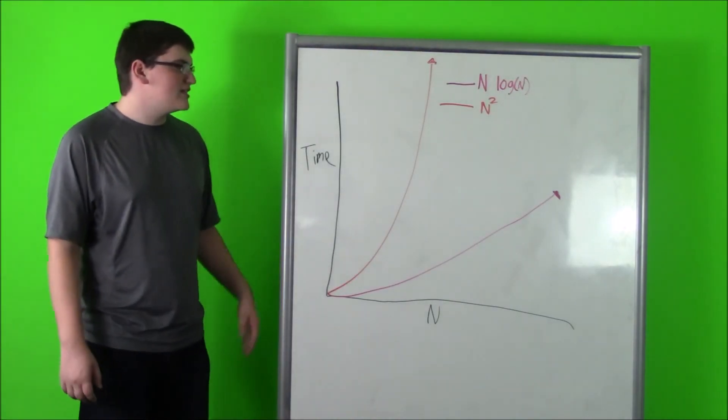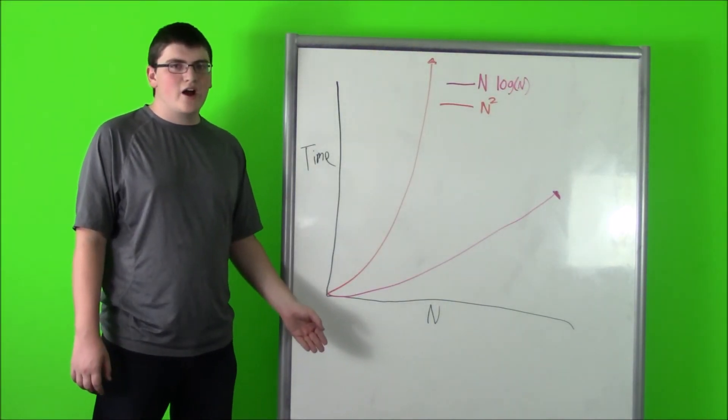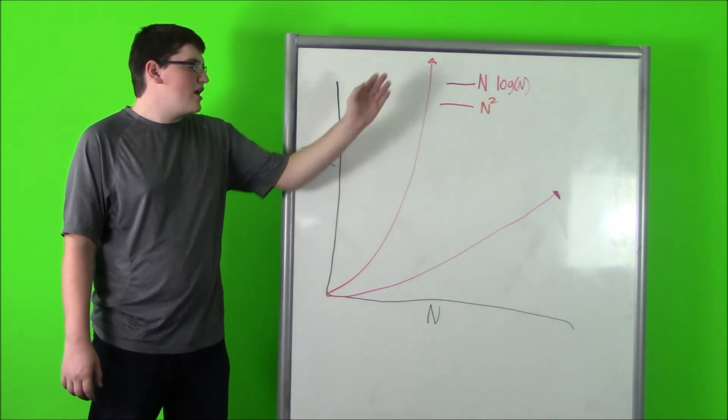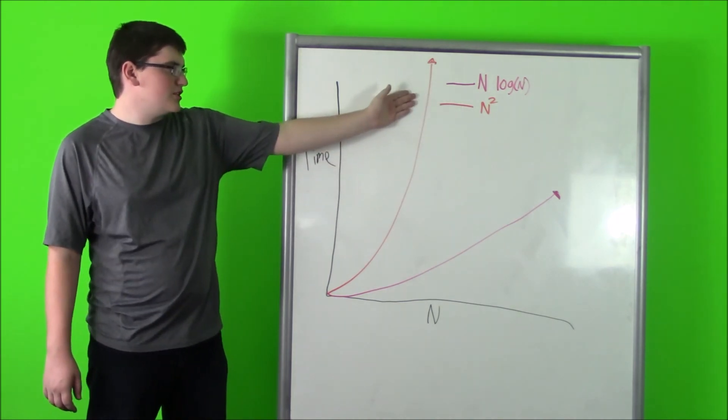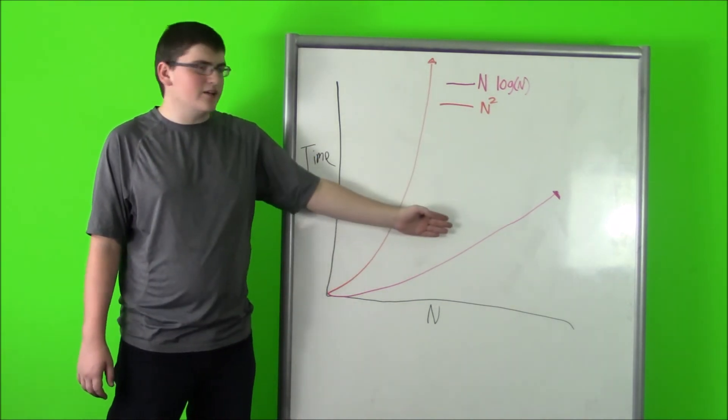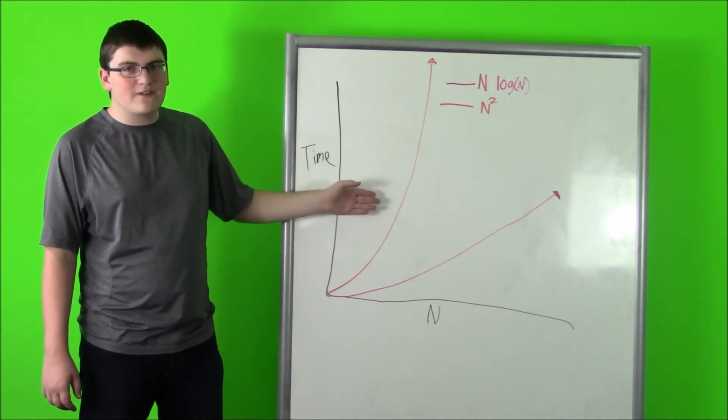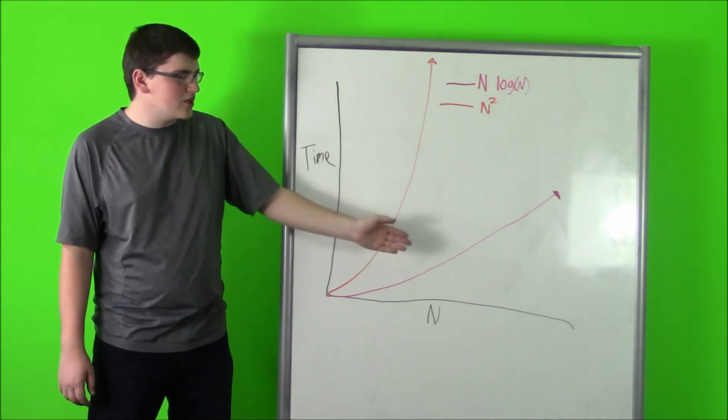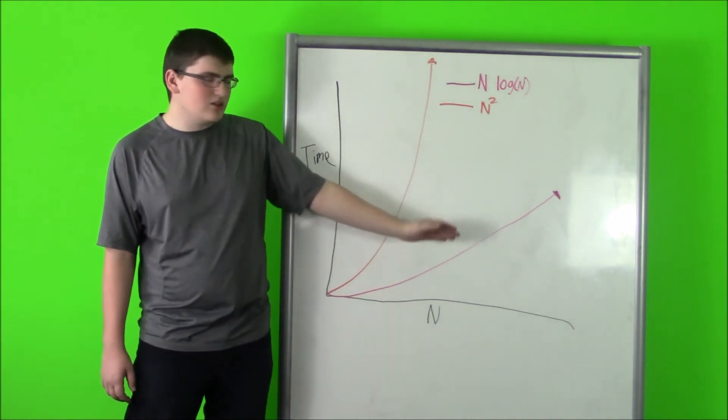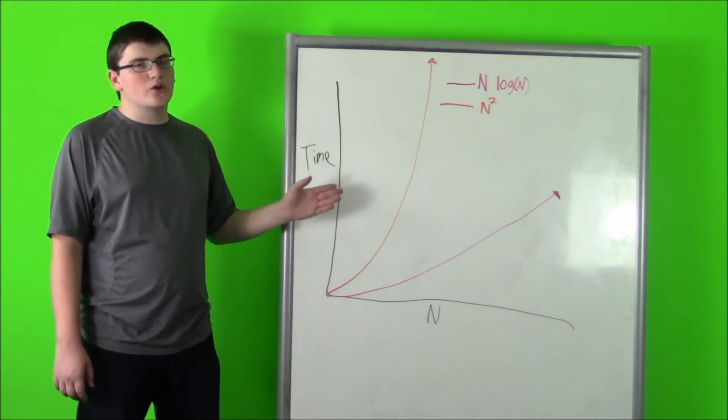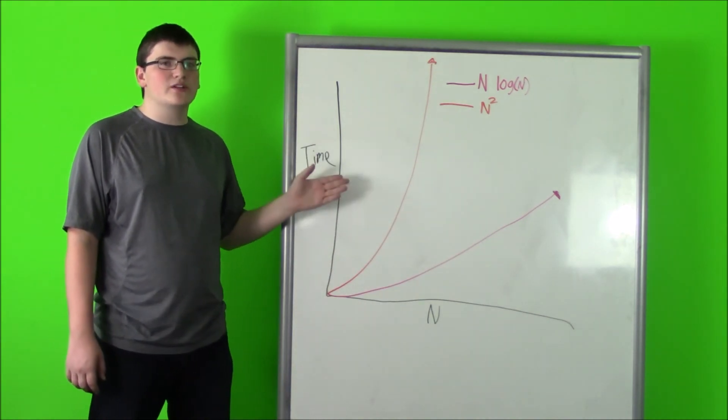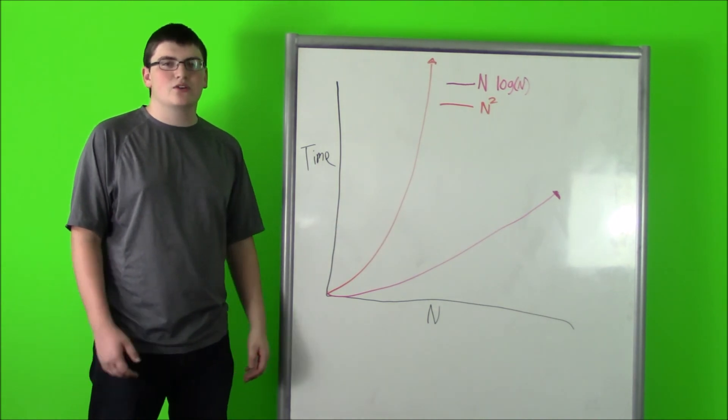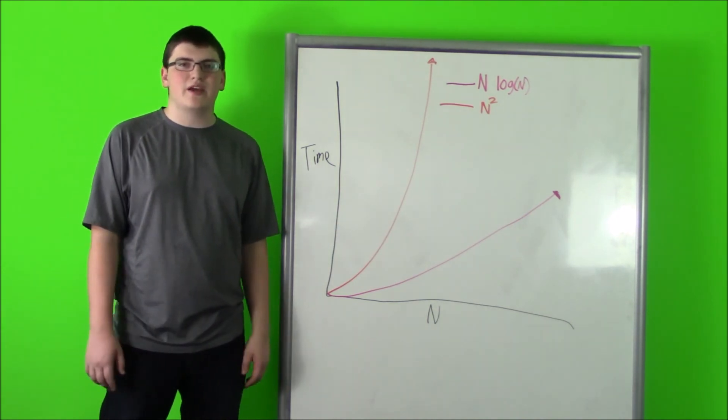Here I've made a time versus N graph of our Big O notations. N squared is orange and n log n is red. N squared will go up much faster as N increases than n log n. This means merge sort is much better than bubble sort because it takes much less time when you get into the millions of N.